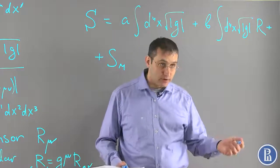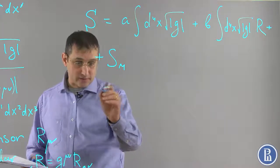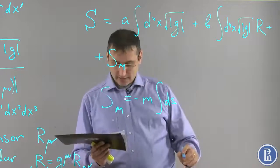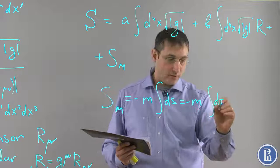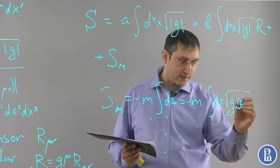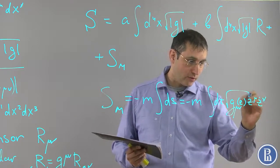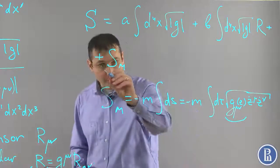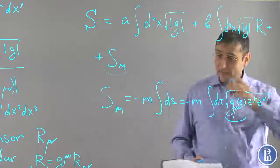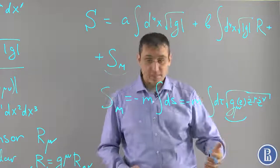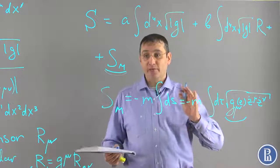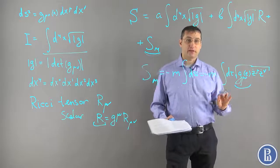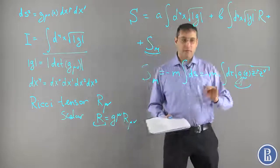The simplest example of a matter action we have already encountered in the first lecture: it is minus m times the integral over ds, which equals minus m ∫dτ √(g_{μν}(z) ż^μ ż^ν). This exactly describes the coupling of a particle to the metric and is an example of the matter we have in mind. All that we need to know at this point is that this action is invariant under general covariant transformations — nothing else — for the derivation of the Einstein equations.